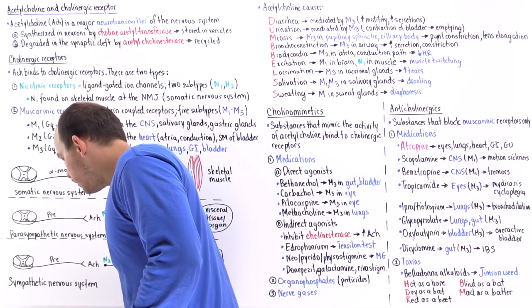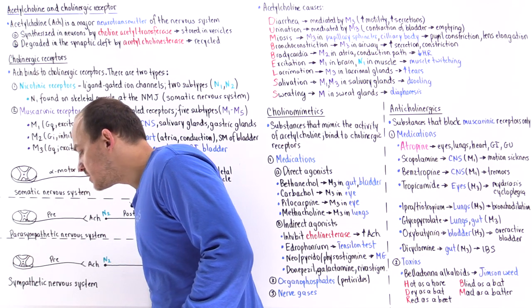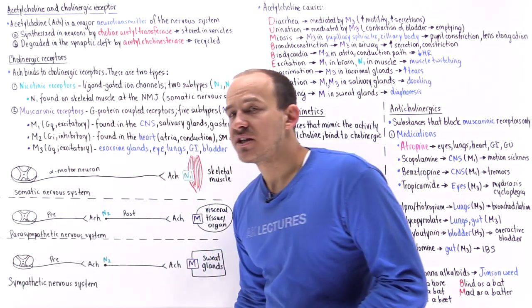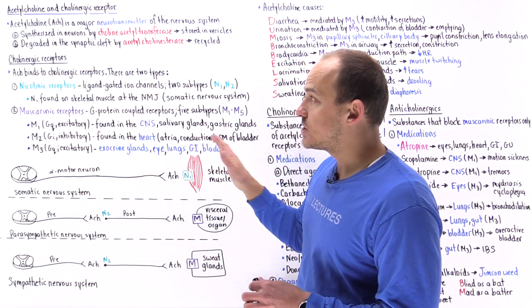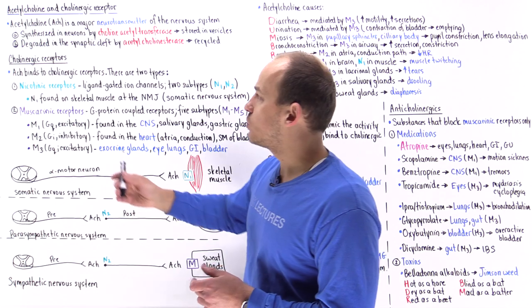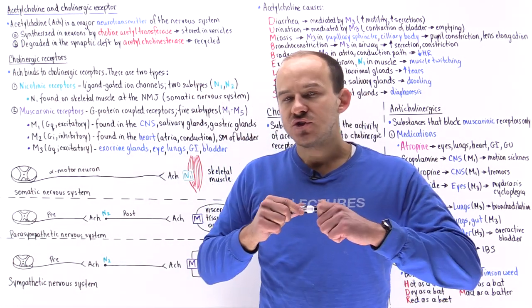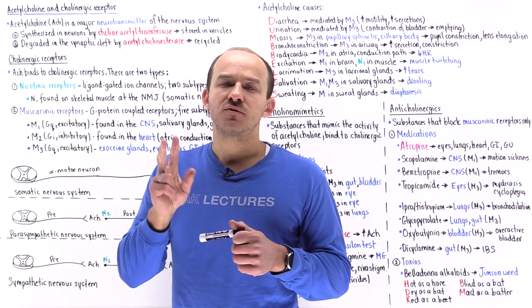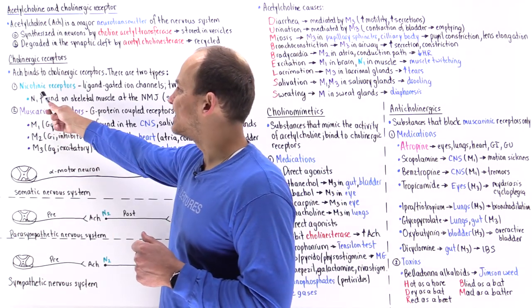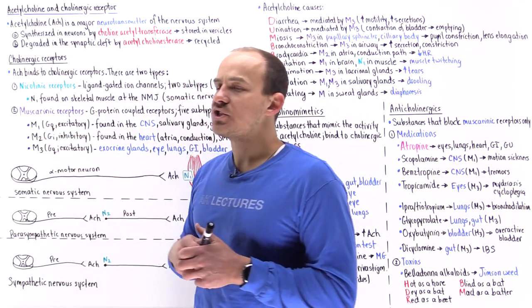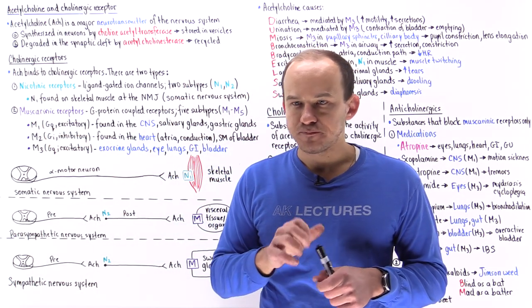For acetylcholine to carry out its function, it has to bind to receptors. The receptors that it binds to are known as cholinergic receptors. We have two different types of cholinergic receptors: nicotinic receptors and muscarinic receptors.